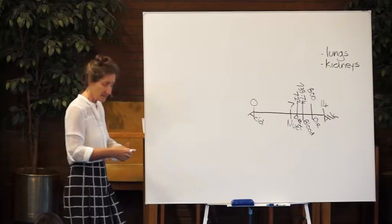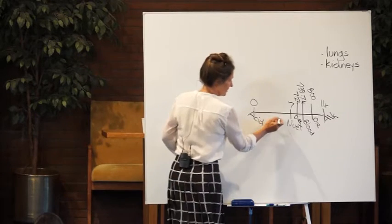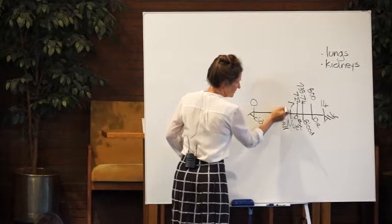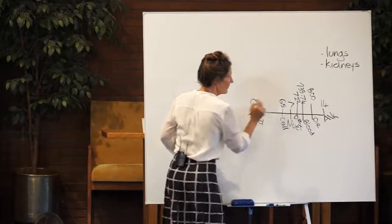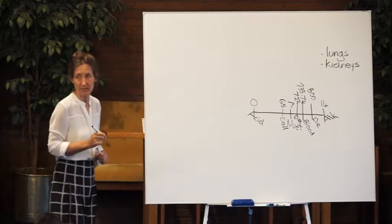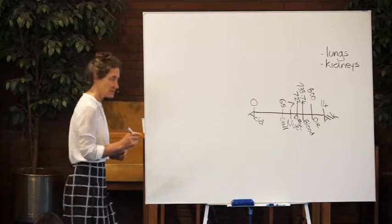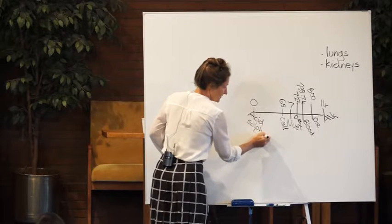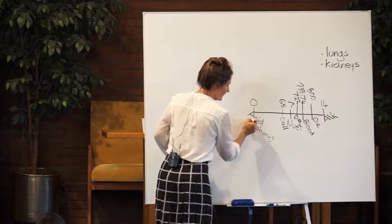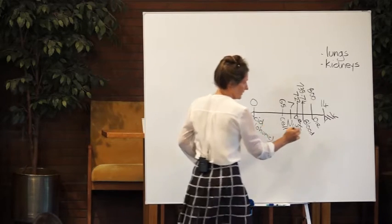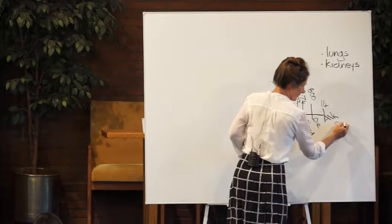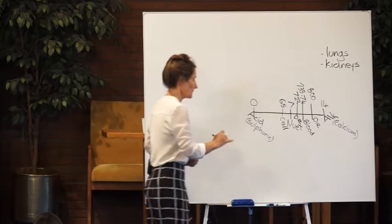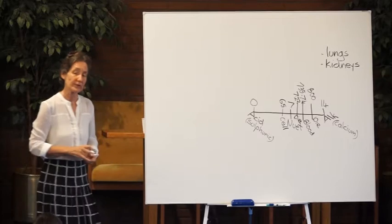But the pH at the cellular level can change. Now, the pH at the cellular level should be approximately 6.5. That's very slightly acid, and there is a reason for that. The most acidic substance is sulfuric acid, and sulfuric acid travels at the speed of light. The most alkaline mineral is calcium, and on the scale of speed, calcium doesn't even move. So it's a speed thing.